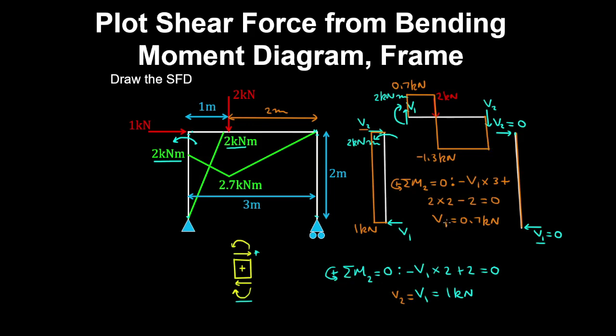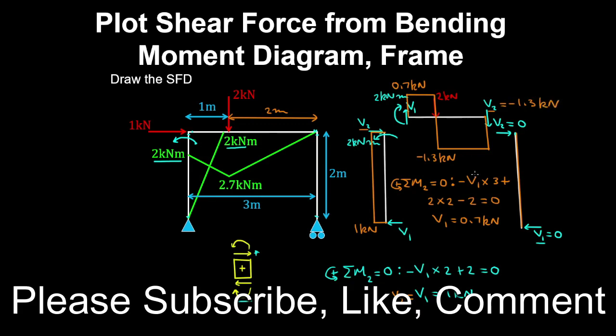Now alternatively, you can take a vertical equilibrium of forces, and you'll find that V2 is minus 1.3kN. Please subscribe, like and comment to help me reach more students.